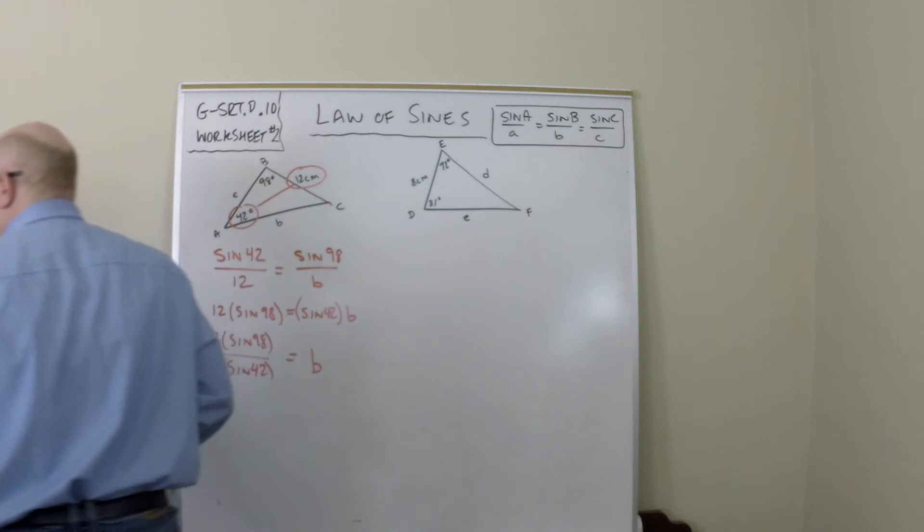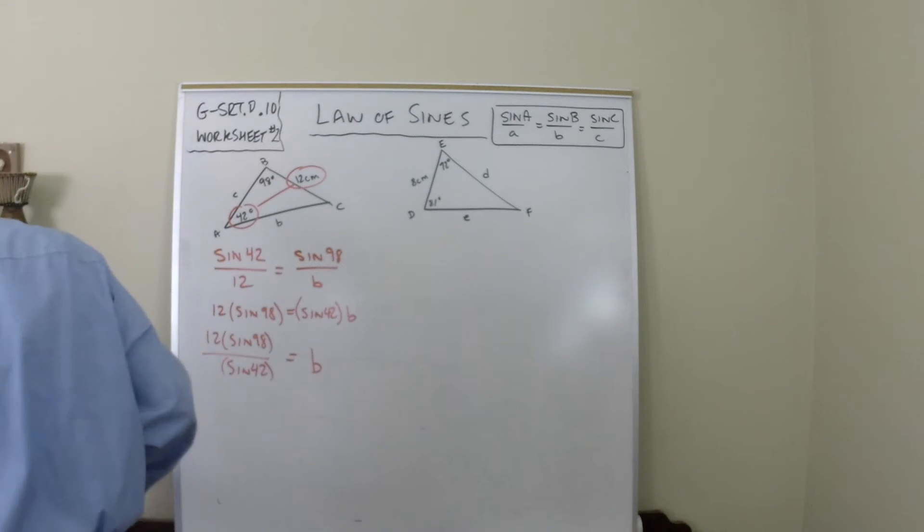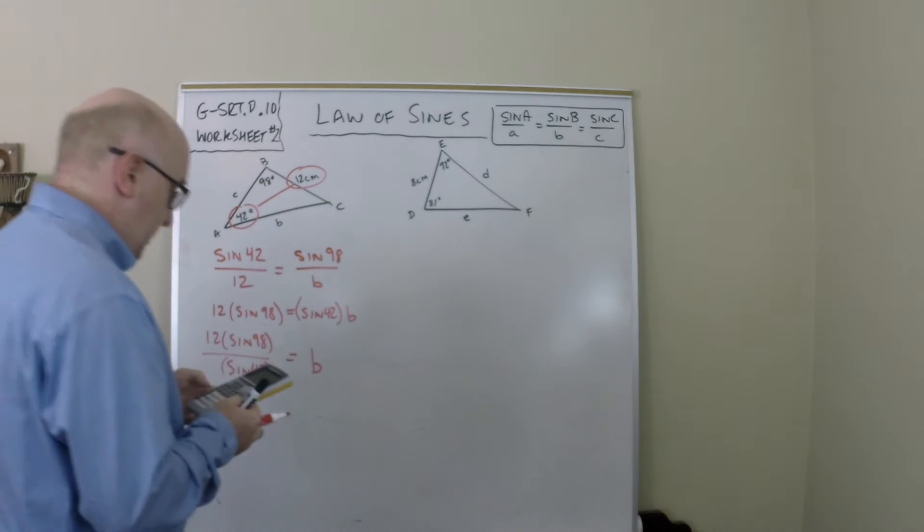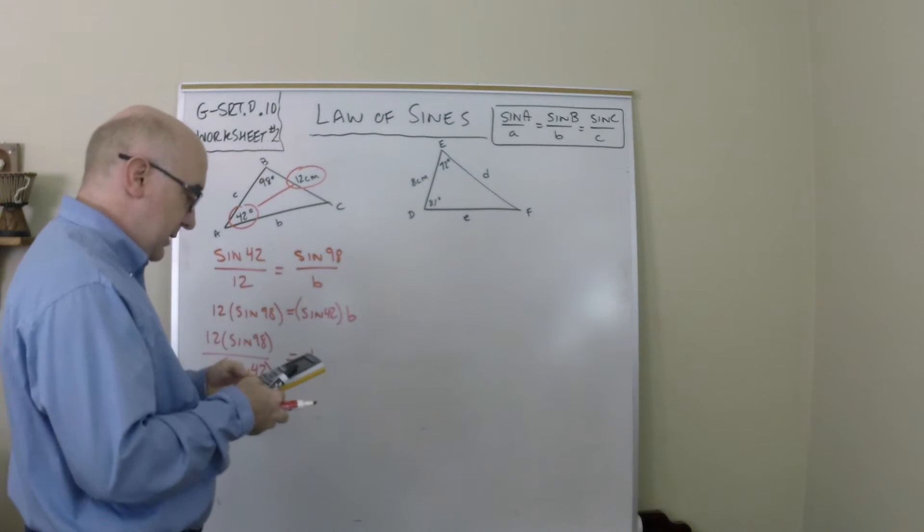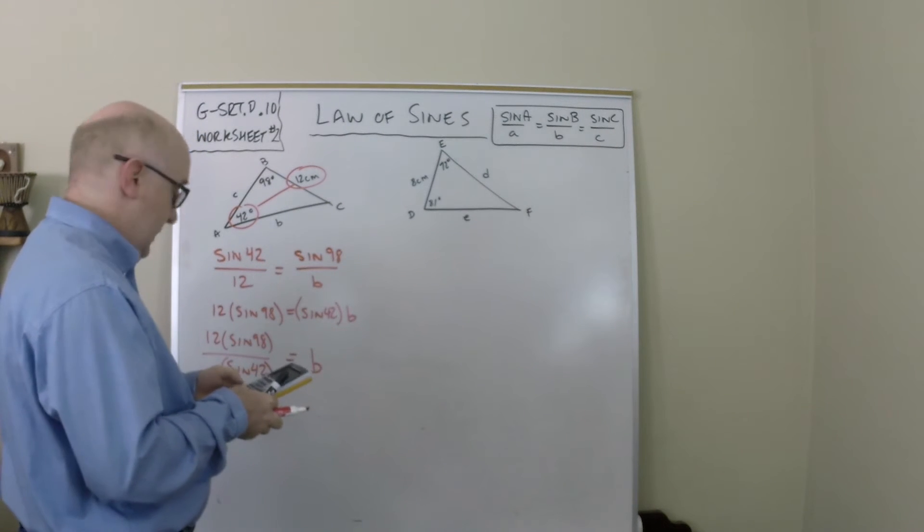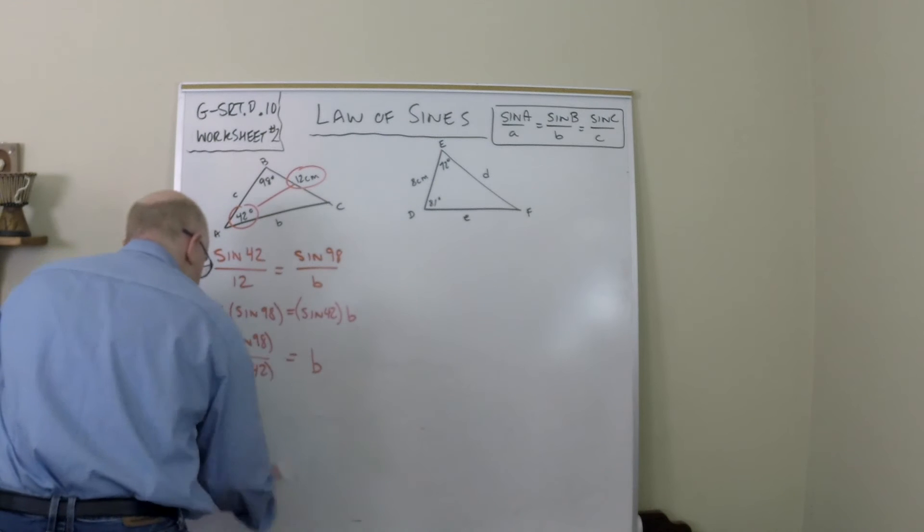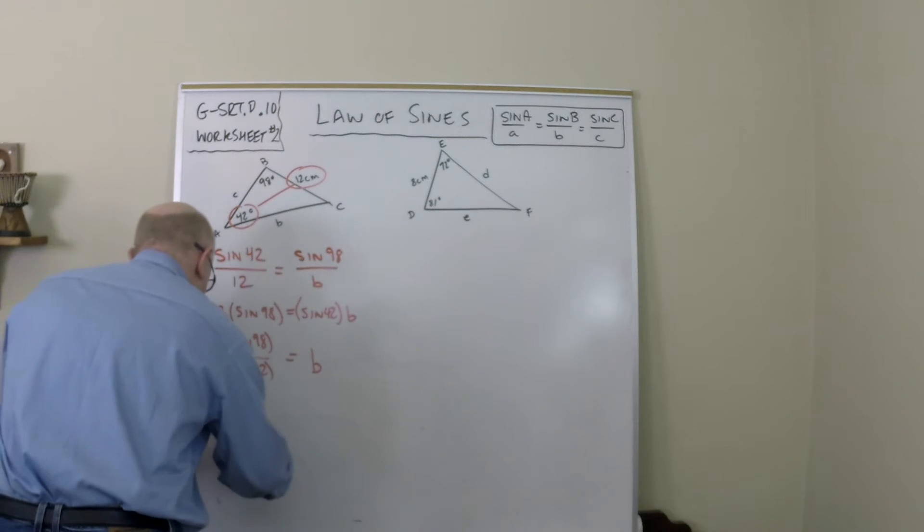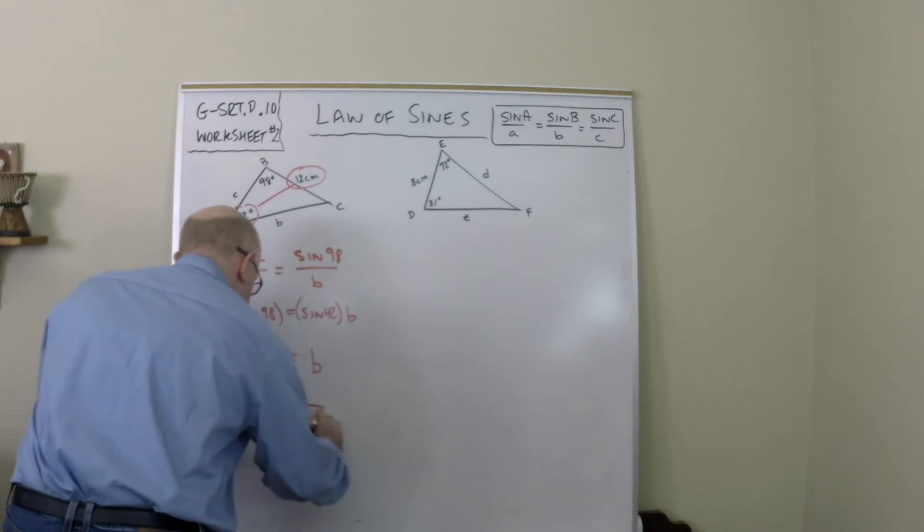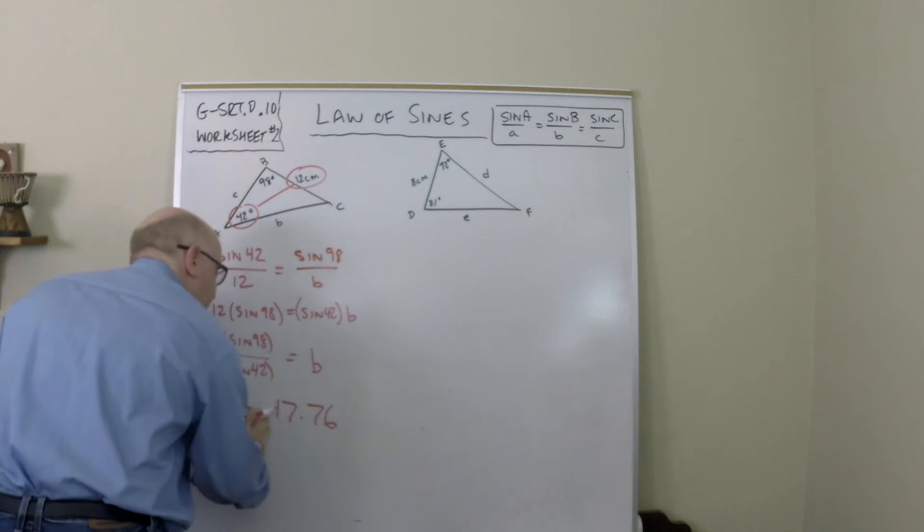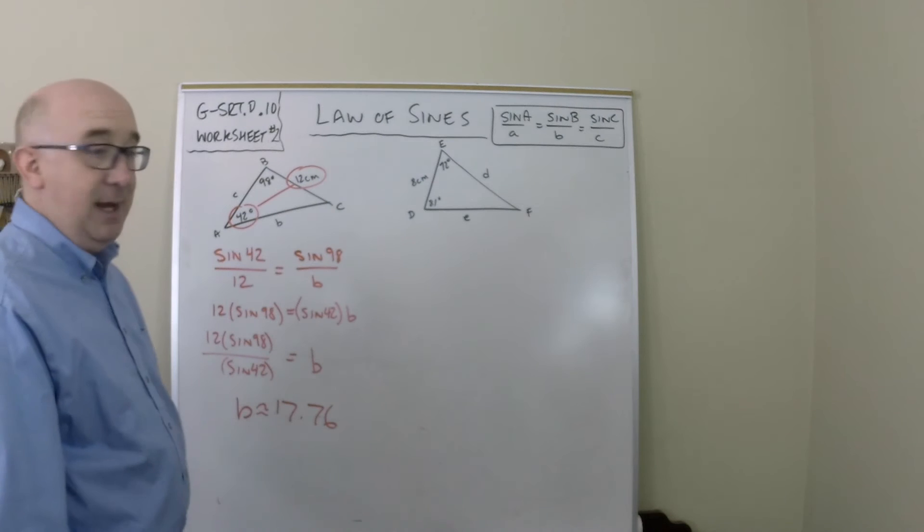Let me grab my calculator to do this. So 12 times sine of 98 divided by sine of 42 tells me that b is 17.76 approximately. I'm rounding to two decimal places. But that would be the length of that side.